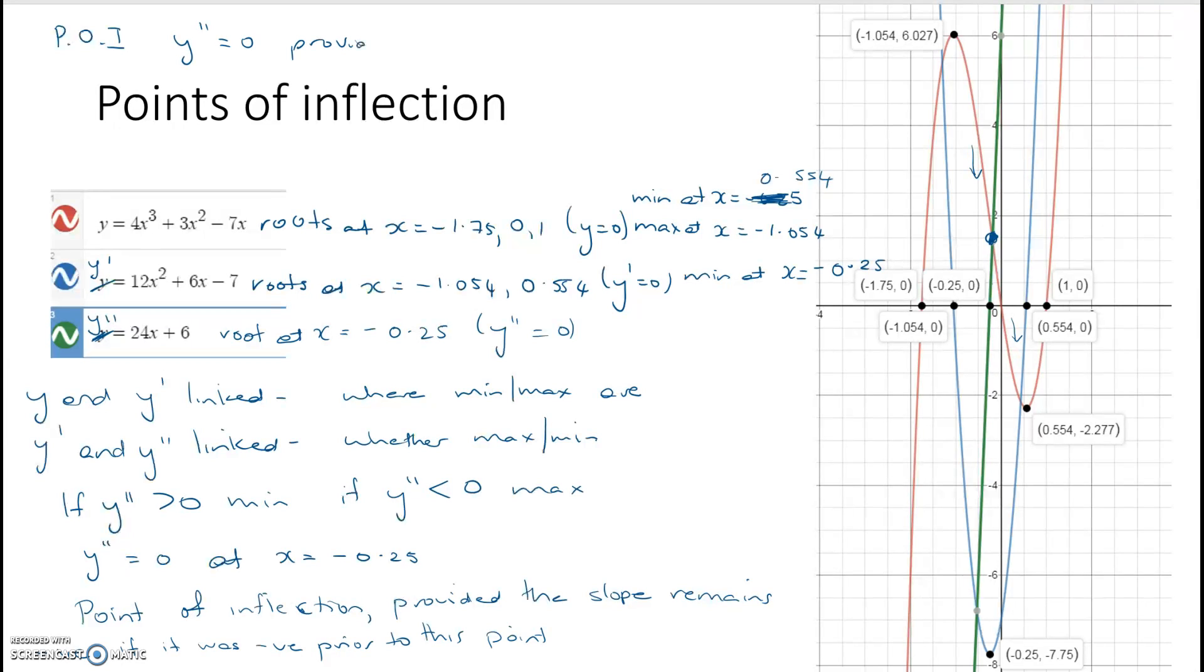Provided the slope remains negative or positive before. Now, if it's a nice cubic, then the point of inflection is going to be halfway between the max and the min.